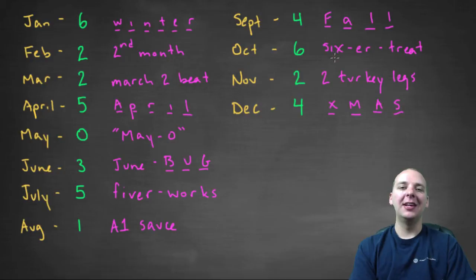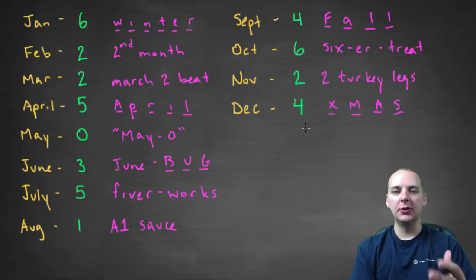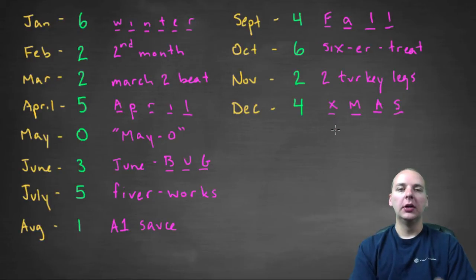October, think of the phrase Sixer treat, like trick-or-treat because in October most kids go Halloween trick-or-treating. We already talked about November, and December is the number 4 for Christmas or X-mas as you can shorten it to, so X-mas has 4 letters, you can use the number 4.